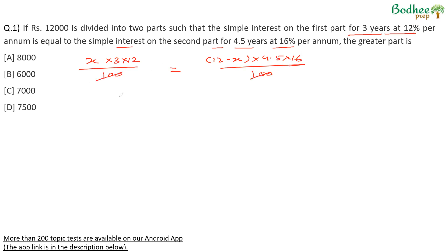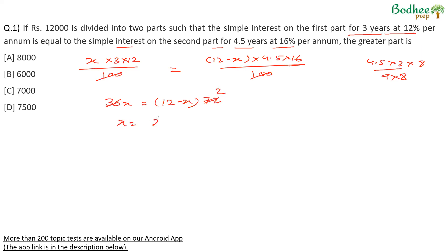According to the question, the two simple interests are equal. So if we equate them, the 100s cancel. We get 36x = (12,000 − x) × 4.5 × 16. 4.5 × 16 = 72. So 36 and 72 cancel, and therefore x = 24 − 2x, or 3x = 24, which means x = 8,000. One part is 8,000 and the other is 4,000. The greater part is 8,000.